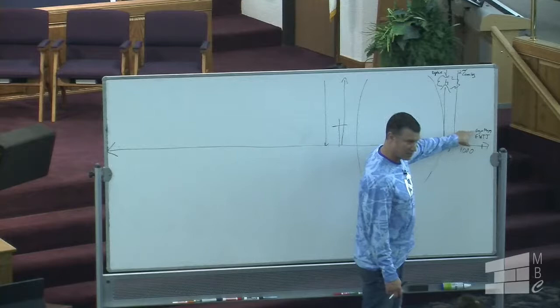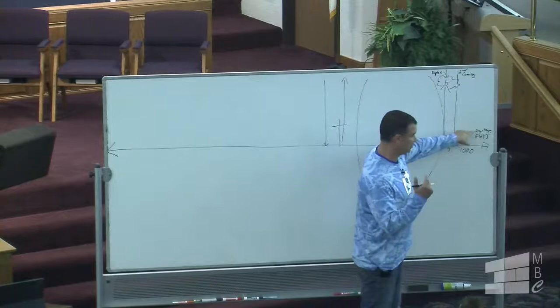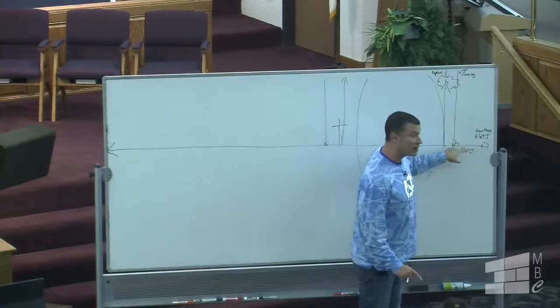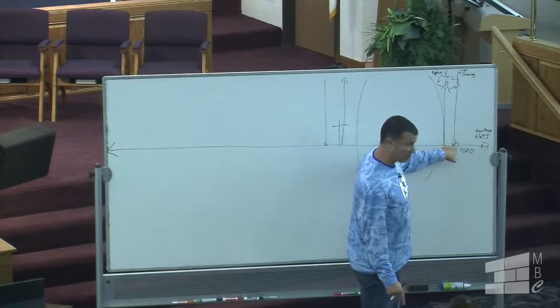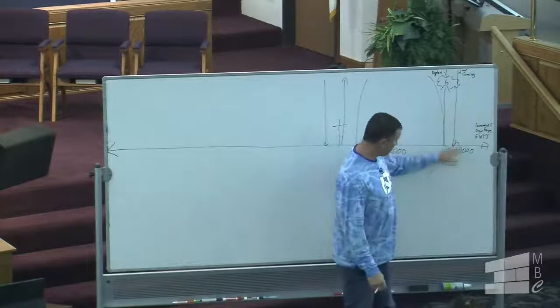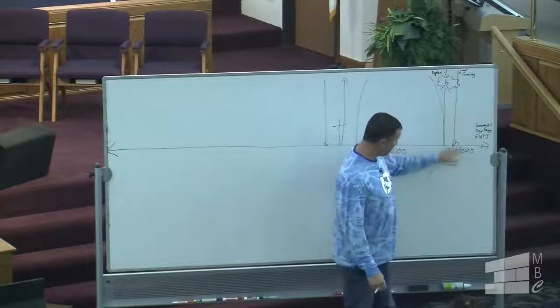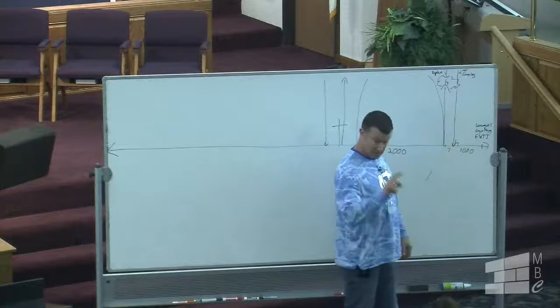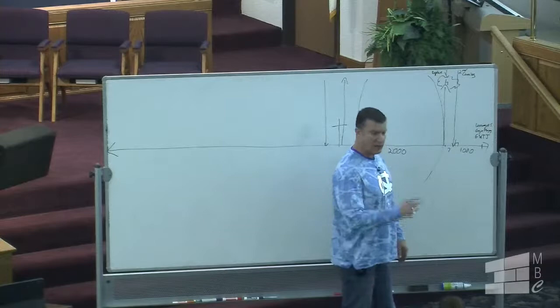What happens to the devil? He's bound in the center of the earth — bound for that thousand years. Then at the end, the Bible says he'll be loosed for a season. So before the great white throne judgment, before Gog and Magog, there is the loosing of Satan. He's loosed for a season, goes out, gathers his army, there's the battle of Gog and Magog, God wipes them out, and then you have the great white throne judgment. Then Satan is cast into the lake of fire. So we have hell at the center of the earth and the lake of fire, which takes place over here.